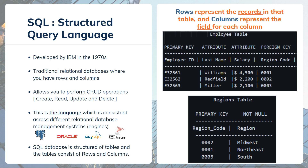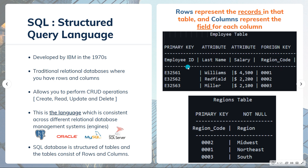The overall structure of any SQL database is mainly in tables, and each table consists of rows and columns. Rows represent the records and columns represent the fields. Let's take a look at this table — we have an employee table with employee ID, last name, salary, and region code. Notice that employee ID is a primary key and region code is a foreign key.